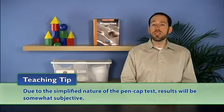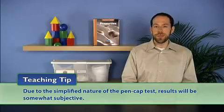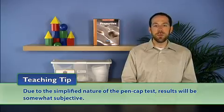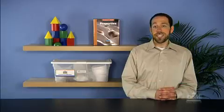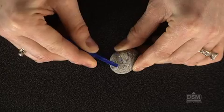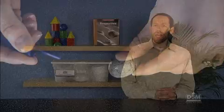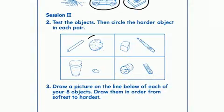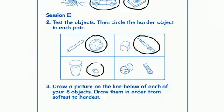Also note that due to the simplified nature of the pen cap test, results in this activity will be somewhat subjective. Instruct students to test the first pair of objects, a piece of chalk and a smooth rock, and compare their results. Then, have students record their results in Question 2 of their activity sheets by circling the harder object of each pair.